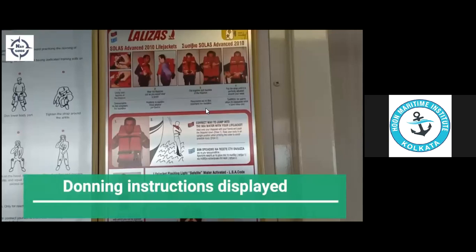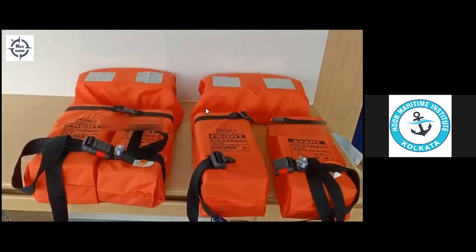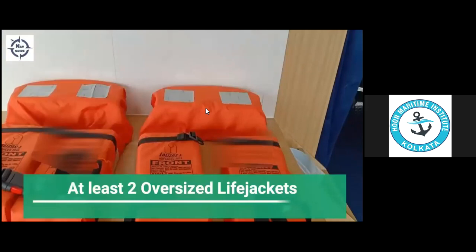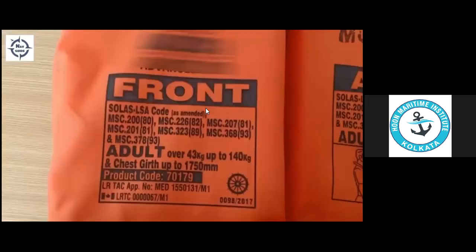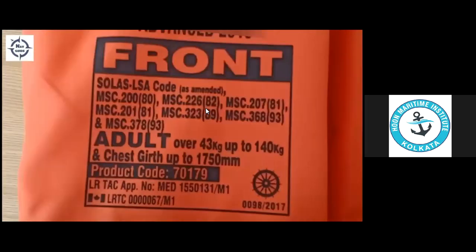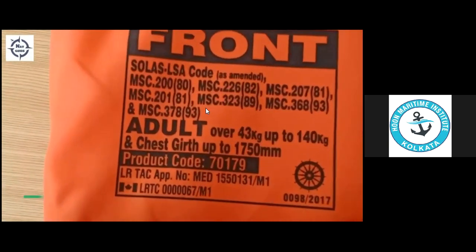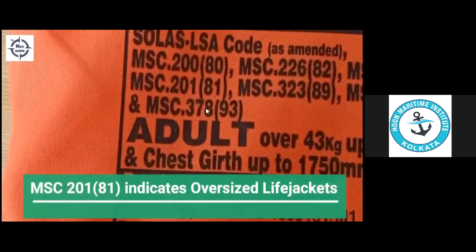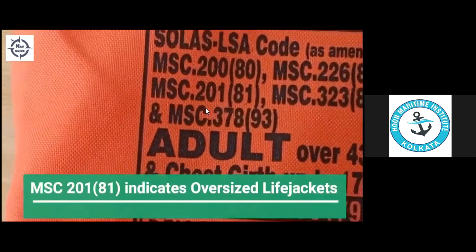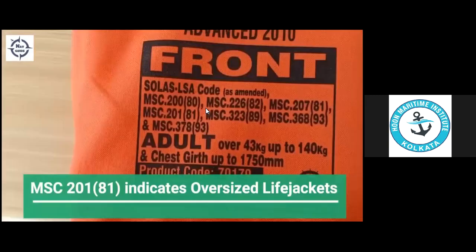The vessel must carry at least two oversized life jackets. On some vessels, all life jackets might be designed for oversized persons. Check the text written on the life jacket. If it mentions SOLAS Chapter 3 as amended by MSC 20181, it means that this is fit for oversized persons up to 140 kgs and chest girth of 1750 mm.